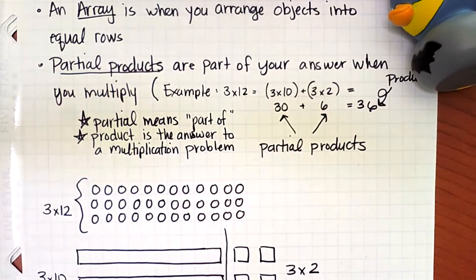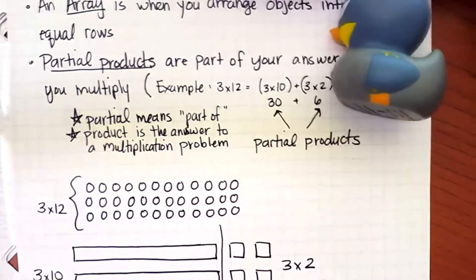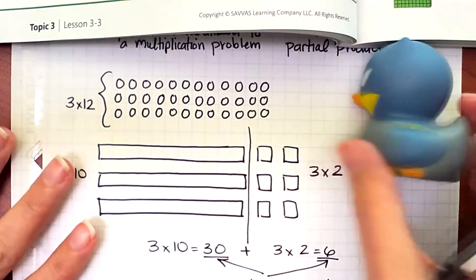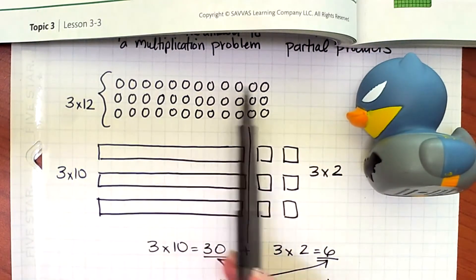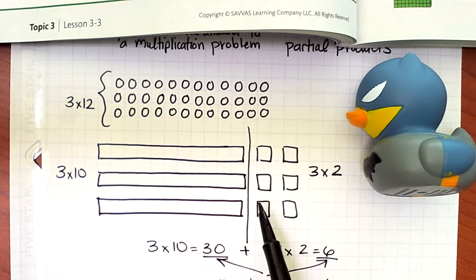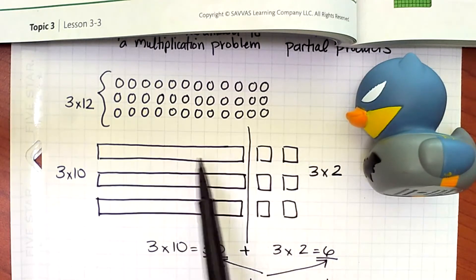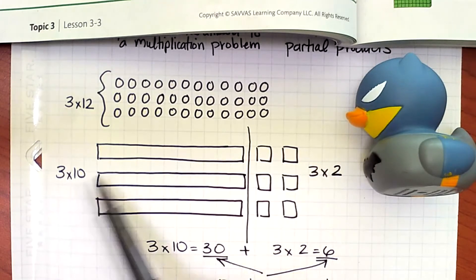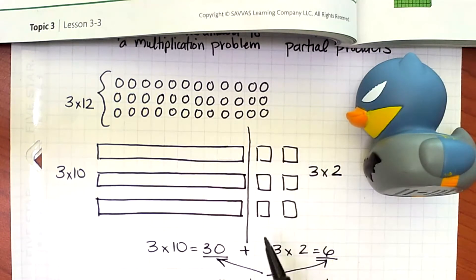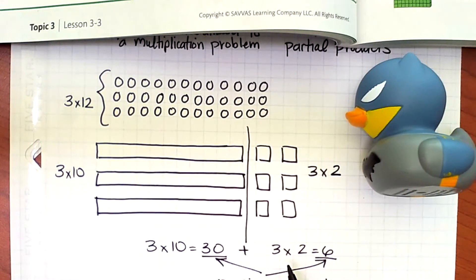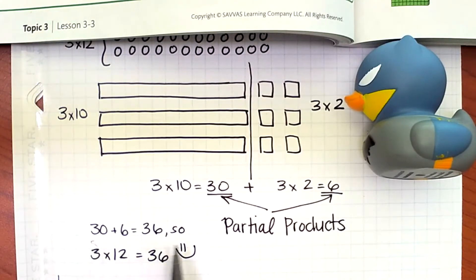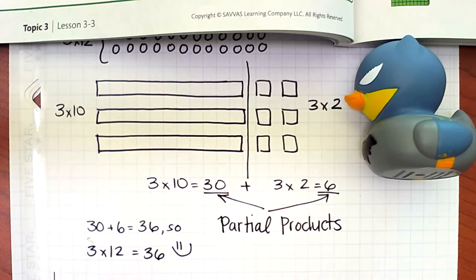Usually when I draw an array, I'll draw it out with little circles. I'll have 3 rows with 12 in each row. What they did was they drew it out with 10 rods and 1 cubes. So this is still 12 - 10 and 2 more, 10 and 2 more, 10 and 2 more. They split the array by place value. They did 3 of the 10 rods, so they counted the 10s first, and then they counted the ones next. They found 3 tens is 30, 3 twos is 6, and those are partial products. We added those two partial products to each other, the 30 plus the 6 to get 36. So we know that 3 times 12 is equal to 36.